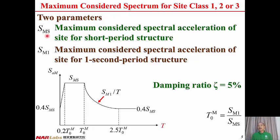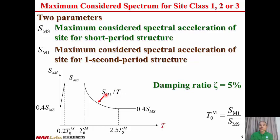The first parameter is SMS, maximum considered spectral acceleration of the site for short period structure. The second parameter is SM1, maximum considered spectral acceleration of the site for one second period structure. The damping ratio is fixed to be 5%, so the maximum considered spectrum is a function of T, the fundamental vibration period of the structure. T0M is not an independent parameter but can be calculated by the formula T0M equal to SM1 over SMS.